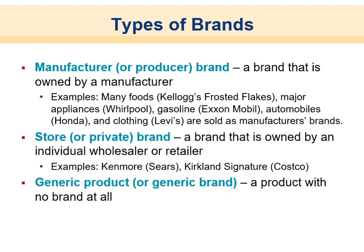Types of brands: manufacturer or producer brands are brands owned by the manufacturer — like Kellogg's Frosted Flakes, Whirlpool, ExxonMobil, Honda, Toyota, or Levi's. Store or private brands are owned by an individual wholesaler or retailer — like Kenmore at Sears or Kirkland at Costco. Generic products or generic brands are products with no brand at all — like knockoff sodas, such as Kmart's Dr. Thunder, a generic version of Dr. Pepper.